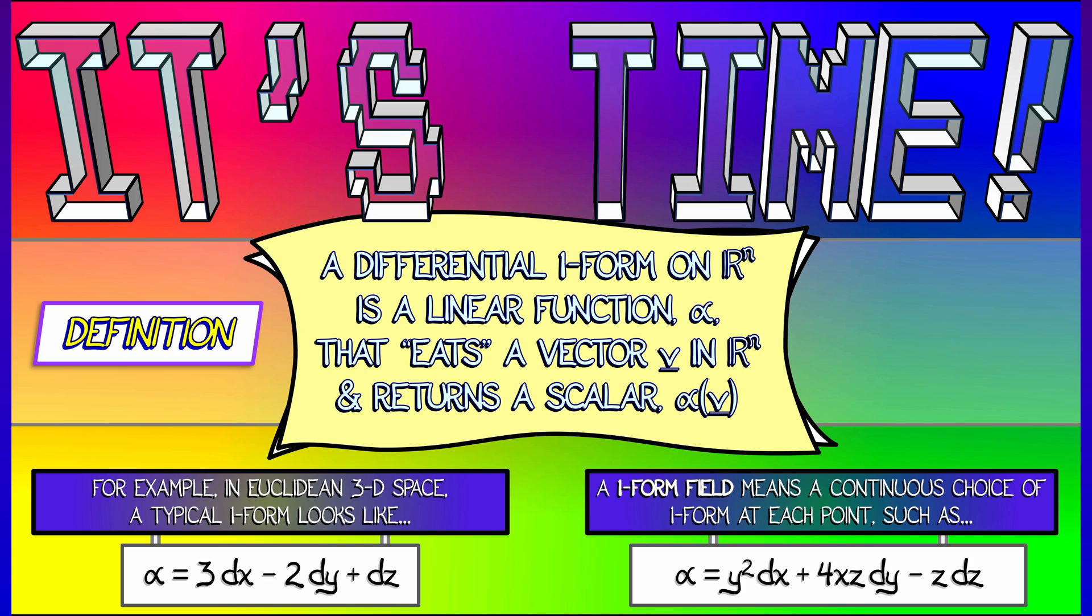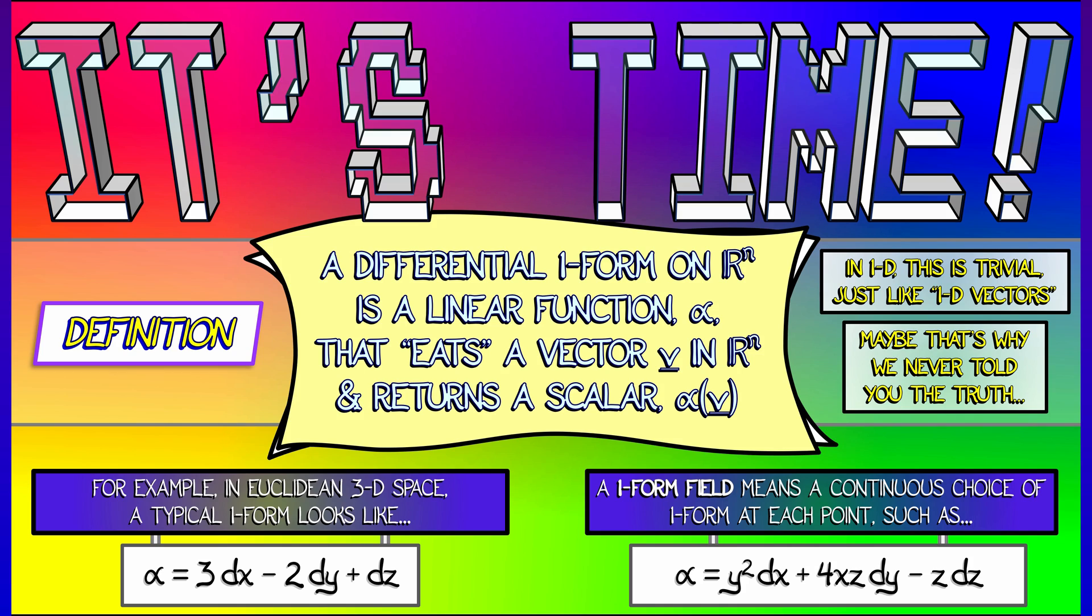Now, why the mystery? Why didn't we tell you what a one form was way back in single variable calculus? Well, the reason is that a vector in 1D is kind of trivial, right? In the same way that a one by one matrix in 1D is trivial, and we wouldn't use that for derivatives. So we never told you about vectors and matrices early on. In the same way, we never told you what dx really is. But now the secret has been revealed.